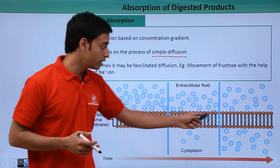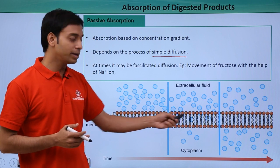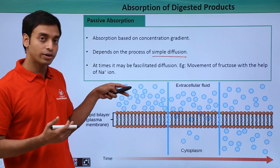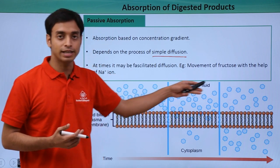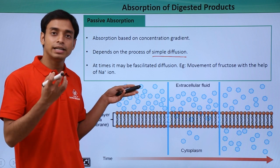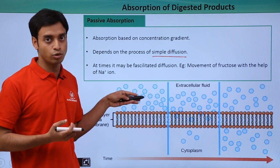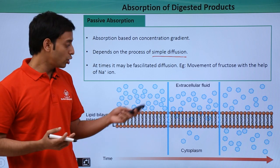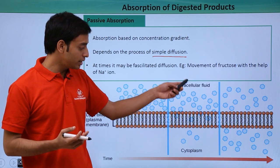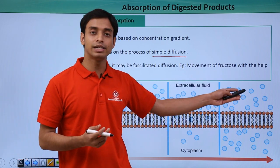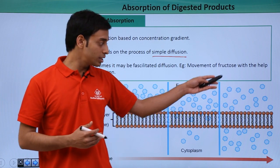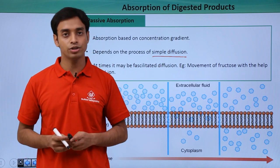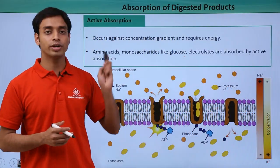To understand passive absorption, let us look at this picture. Here we can see a lipid bilayer membrane where the concentration of the blue-colored molecules in the extracellular fluid — representing the inside of the intestine — is higher. The concentration in the blood is lower. With time, molecules slowly start moving inside until equilibrium is reached. This is simple diffusion based on concentration gradient.